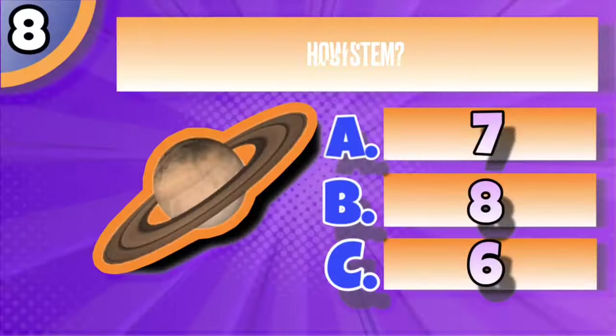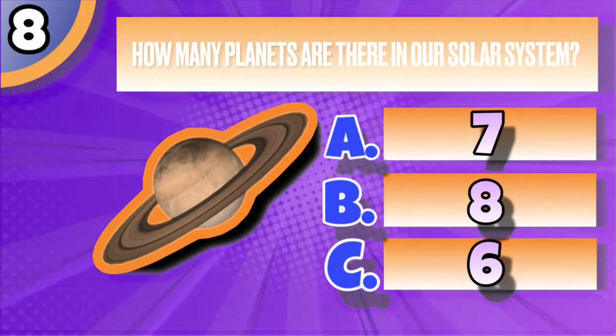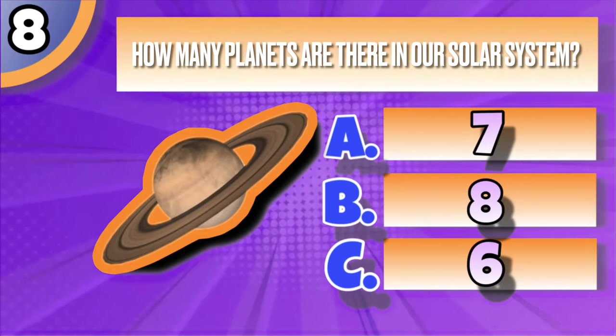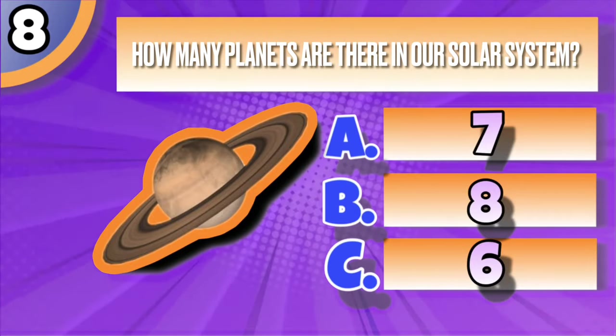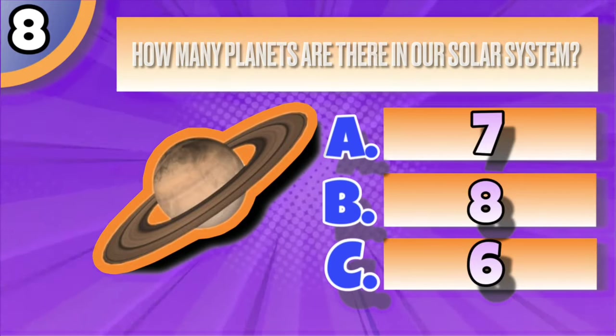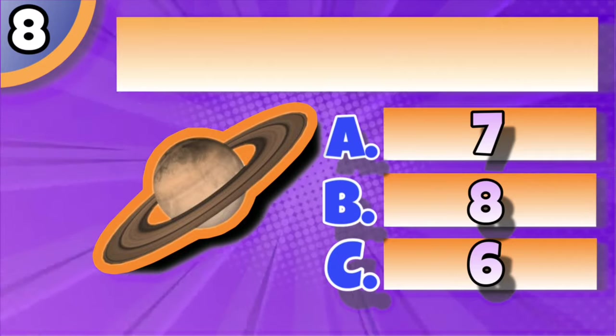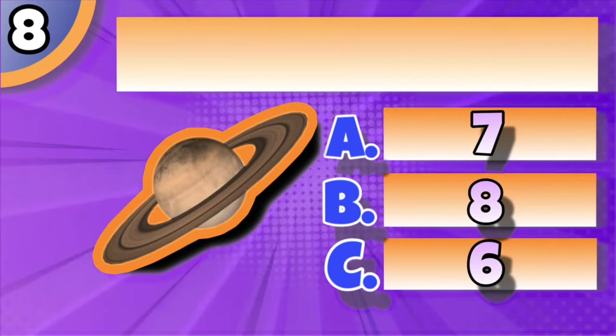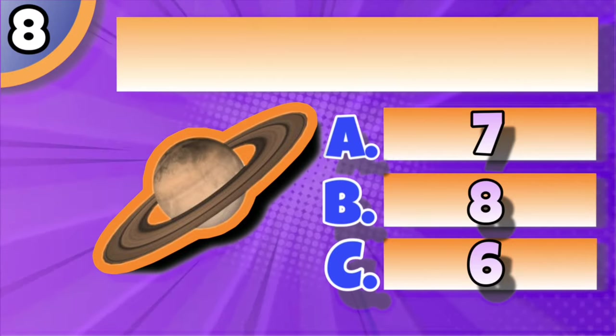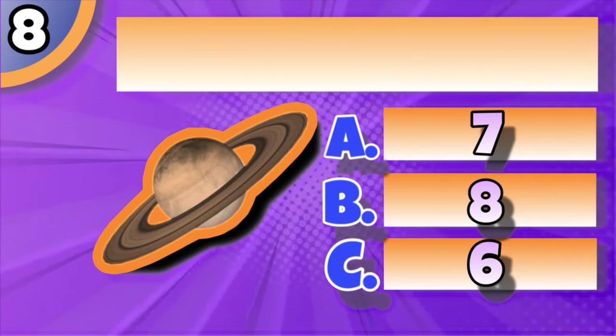We are now on question number 8 of this general knowledge quiz. How many planets are there in our solar system? Is it A 7, B 8, or C 6?